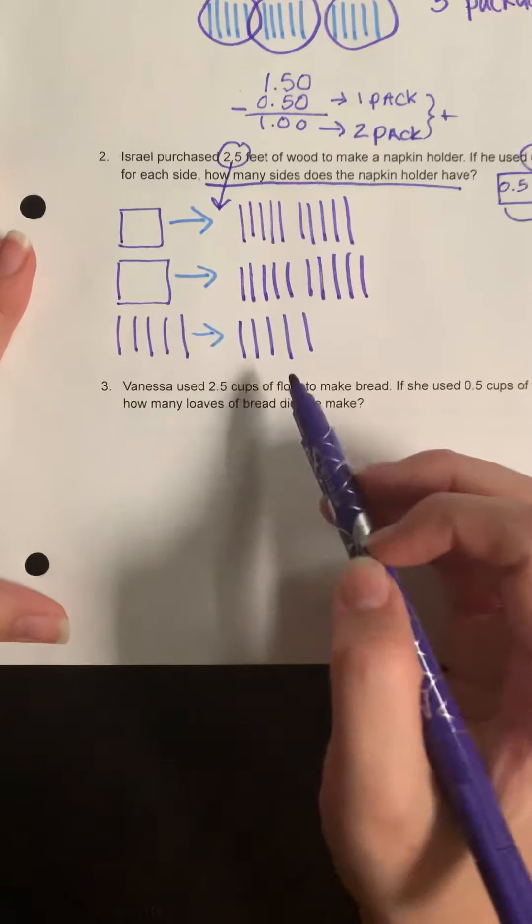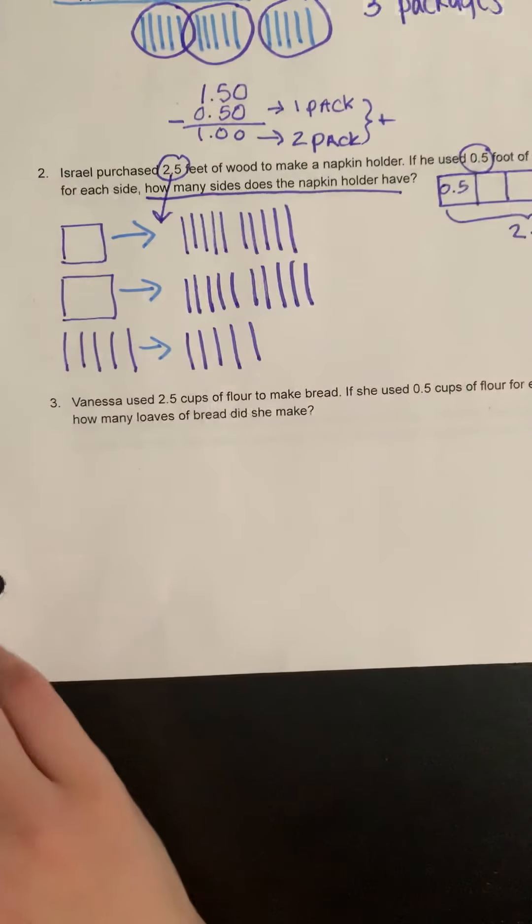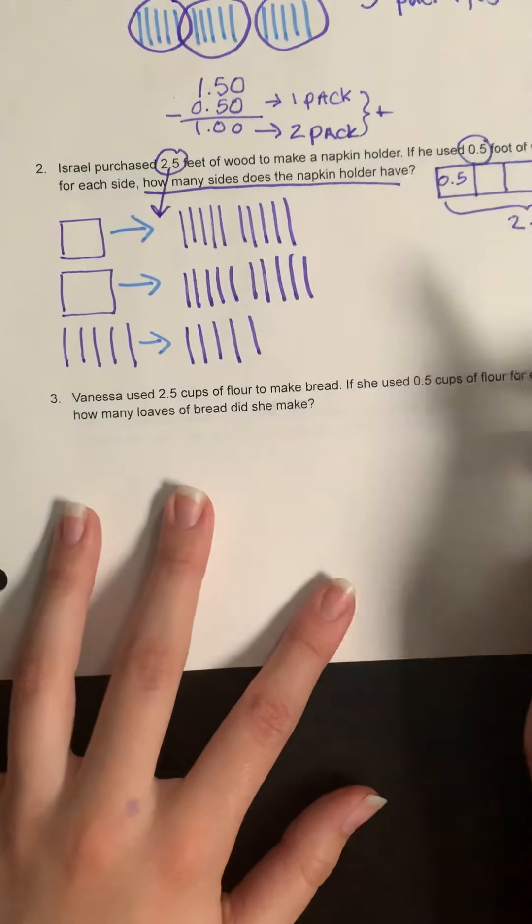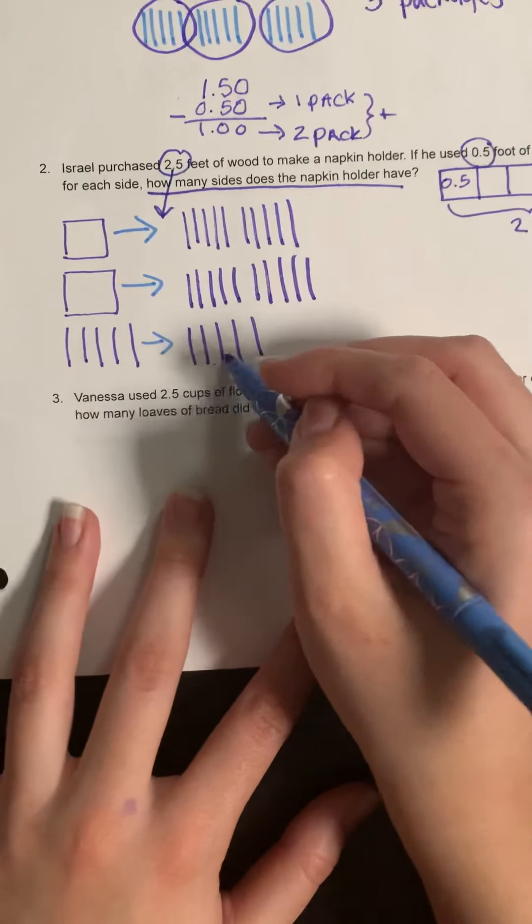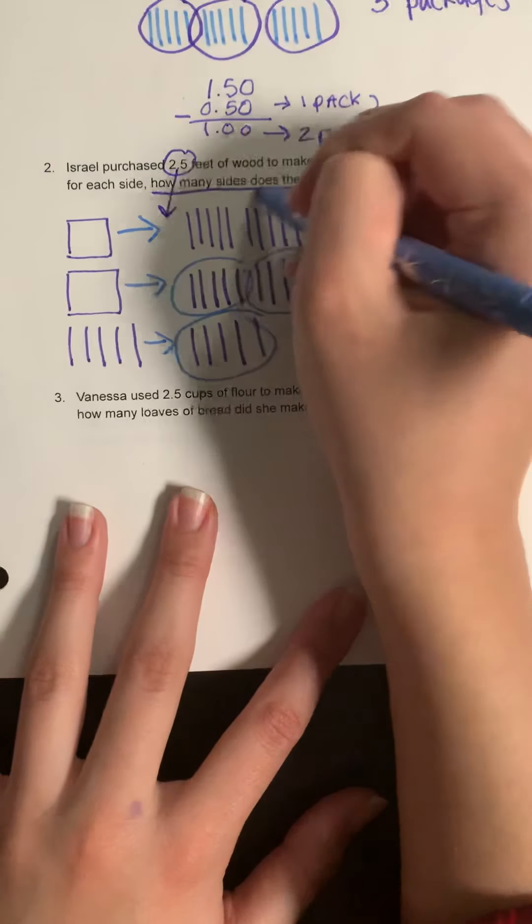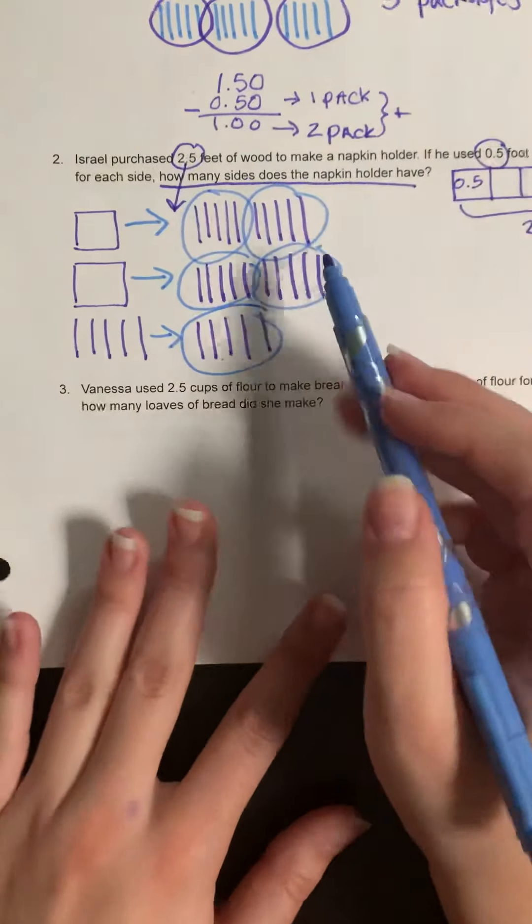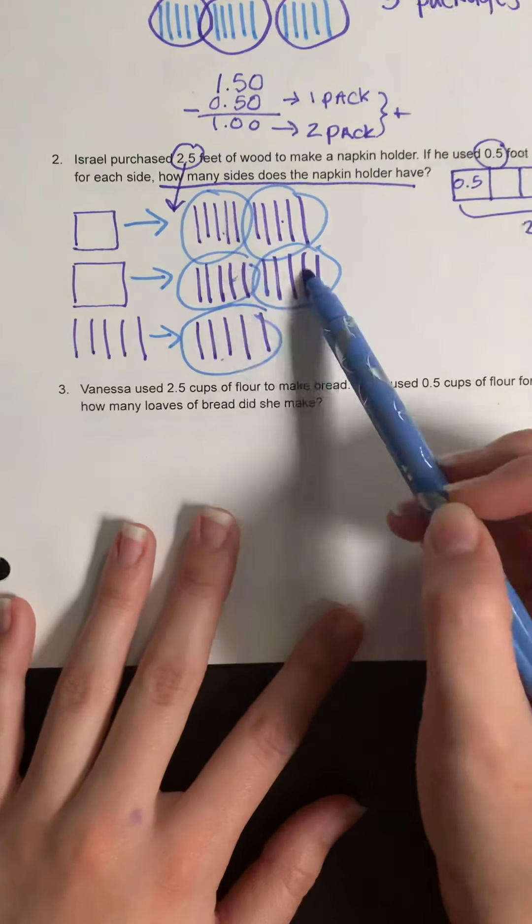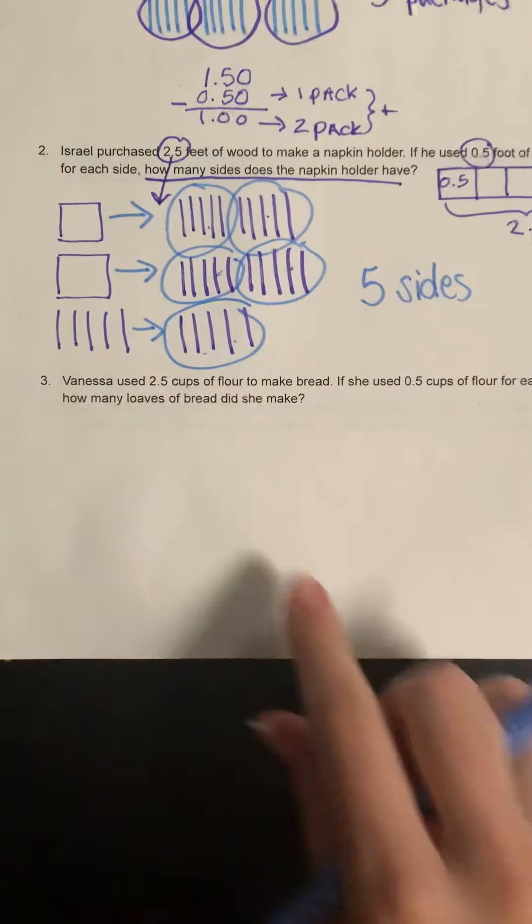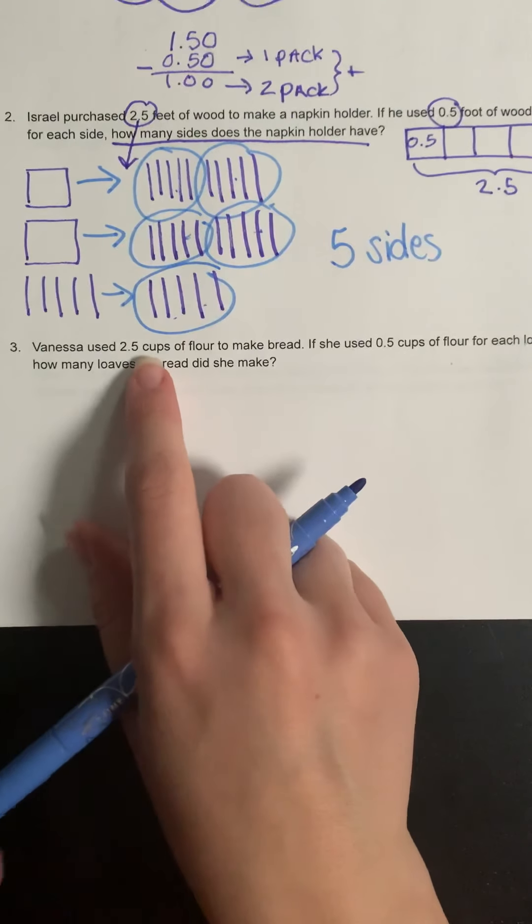So I'm going to group them into 0.5 at a time: 1, 2, 3, 4, 5 - here's 5, 5, 5, and 5. So how many sides will it have? 1, 2, 3, 4, 5. Okay, and then finally, Vanessa used 2.5 cups of flour to make bread.